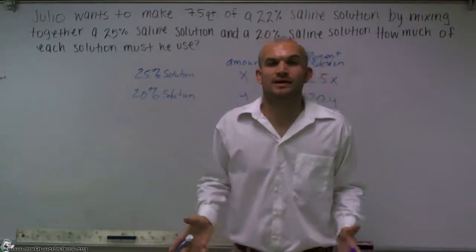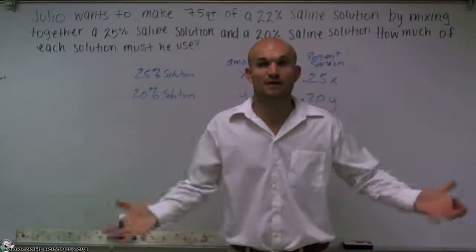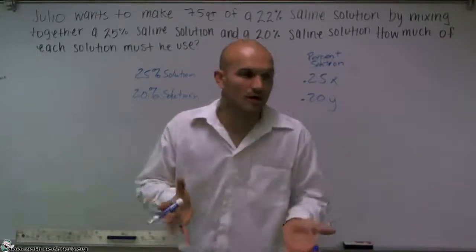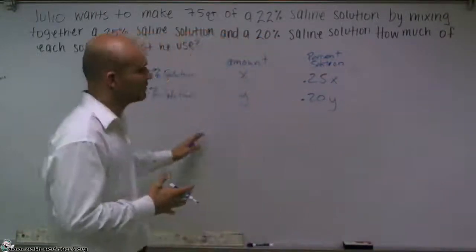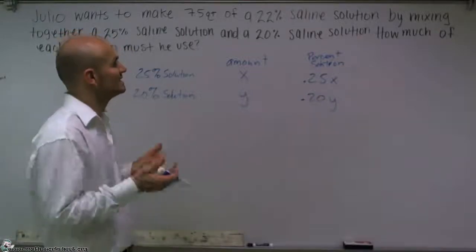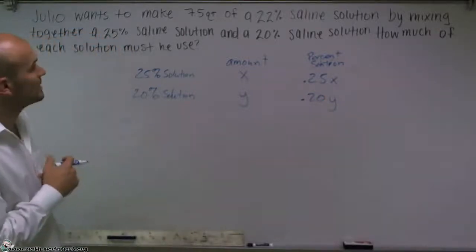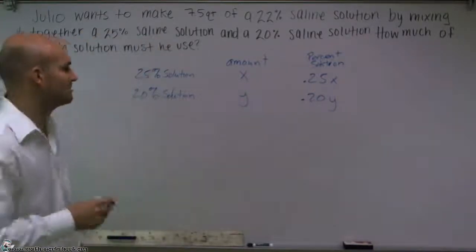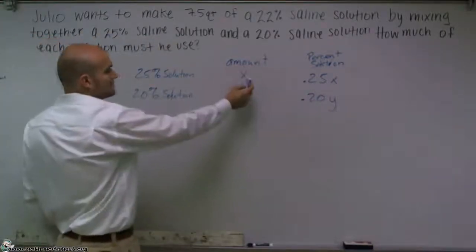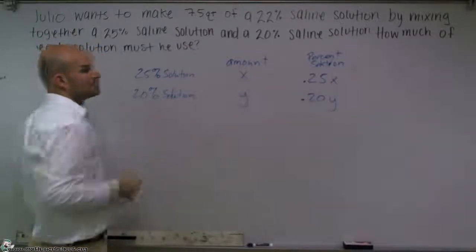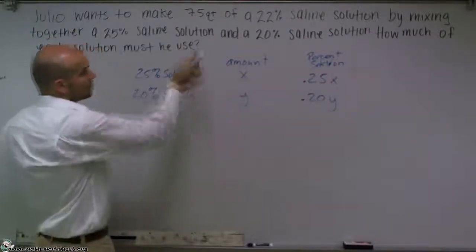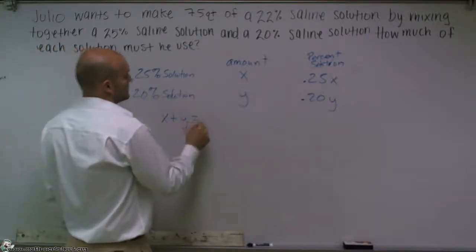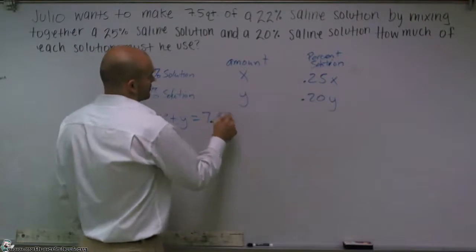So I have my x and my y. I have 0.25x, 0.20y. Now, the main important thing we need to understand about when we're doing mixture problems is we're combining things. We're taking one part, and we're taking another part, and we're bringing them together. So we're going to want to create another equation that's going to represent that bringing together. And one thing I notice is that he wants to make 7.5 quarts. So I could say the amount of my 25% solution plus the amount of my 20% solution is going to equal 7.5. So I could say x plus y equals 7.5.